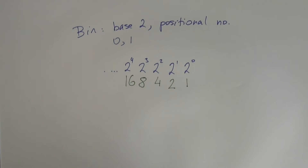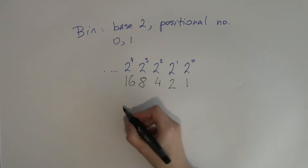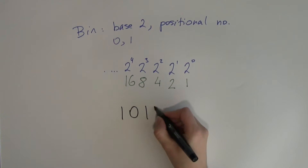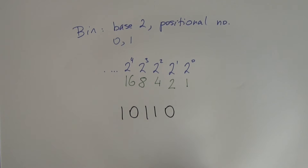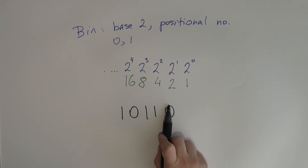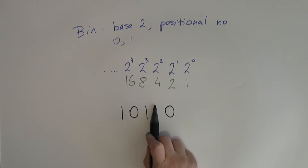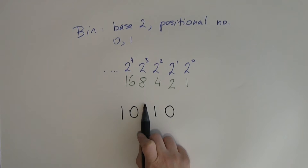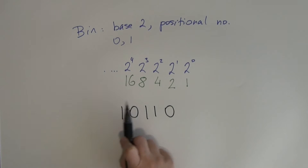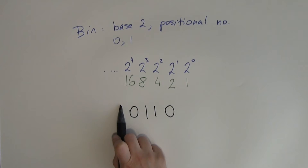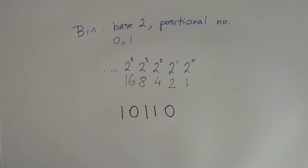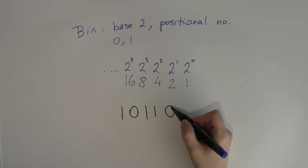When we see a binary number, something like 10110, we know that the place values are 2 to the power of 0, 2 to the power of 1, 2 to the power of 2, 2 to the power of 3, and 2 to the power of 4. So how can we use this information to find out what this binary number is in decimal?